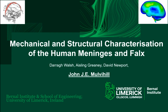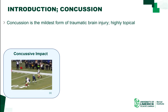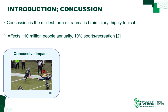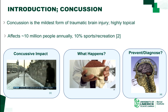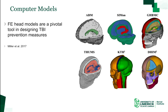My name is John Mulvihill and my talk is on mechanical and structural characterization of the human meninges and falx. We're all aware of what concussion is, how it happens, where it happens, as well as the actual impact of concussion, but our understanding of how to prevent and diagnose it is limited by our understanding of the tissue structure itself.